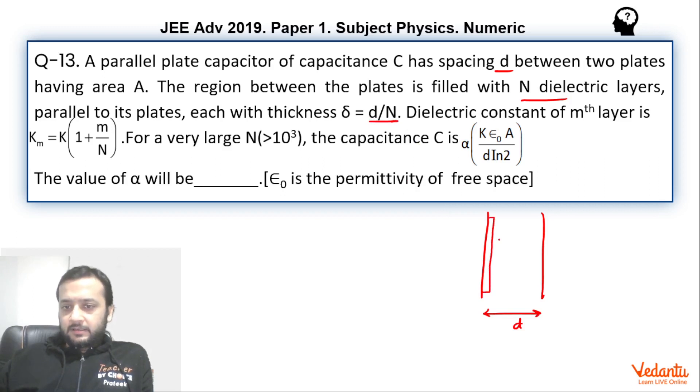So for example, this is one dielectric layer, this is another dielectric layer, and so on—you have filled lots of dielectric layers. Now N is a very large number. The dielectric constant of the m-th layer has been given as K(1 + m/N), where K might be some constant. Under these conditions, we have to find the capacitance and represent the answer in a given form where there will be a number alpha, and we have to find the value of alpha.